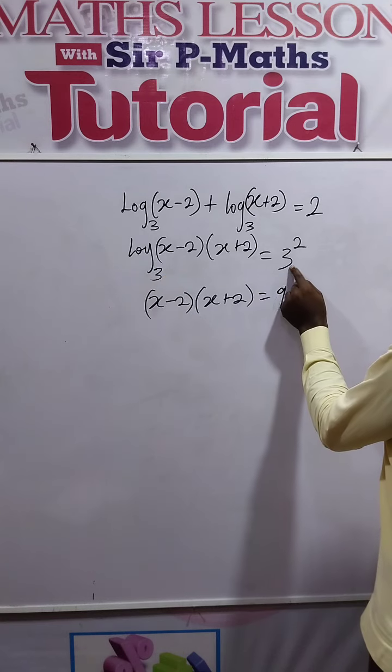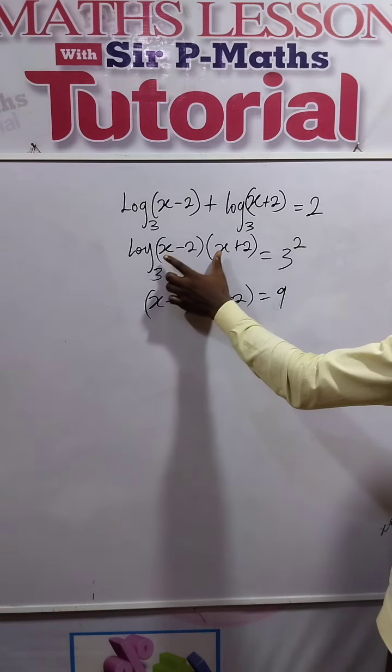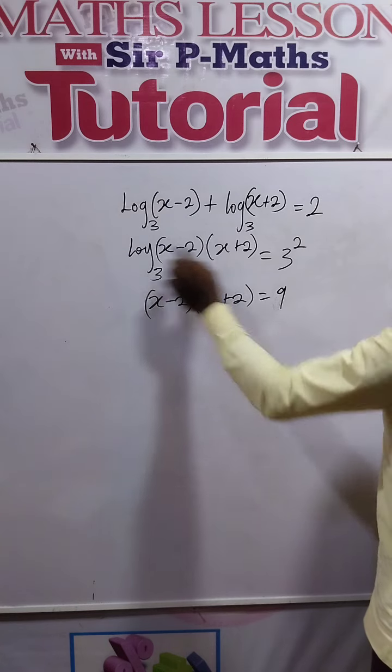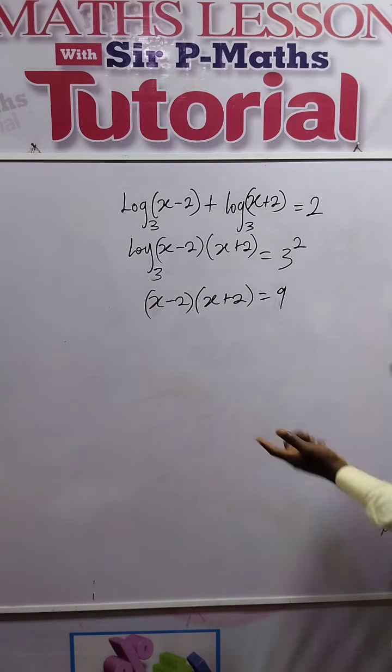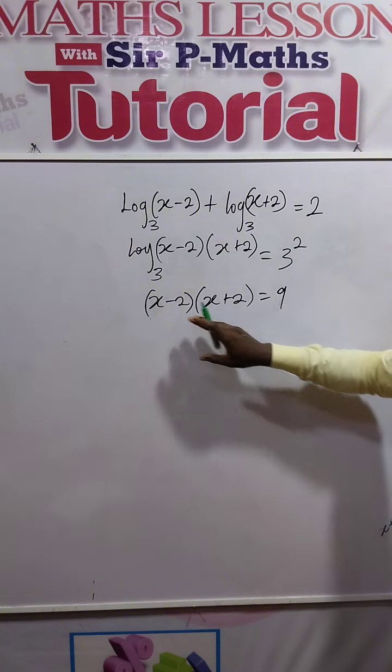And that's all. So we have a quadratic equation. The first thing we do is expand the brackets completely. So x times x gives us x², x times 2 gives us 2x.